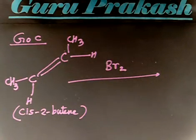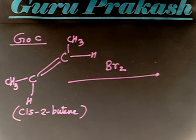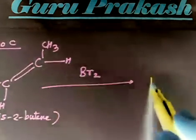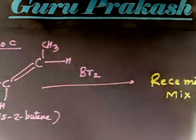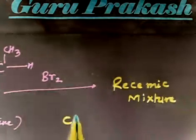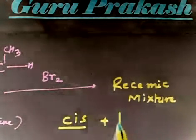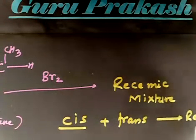Let us write down the product — I am not going to give you any hint. 30 seconds. cis-2-butene, addition of bromine. You are right — in this case you will have a racemic mixture, that is R as well as S both, because the compound is cis and addition of bromine is trans, so you will get the racemic mixture. We have discussed this in class.